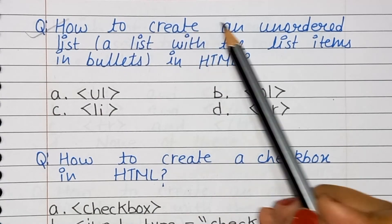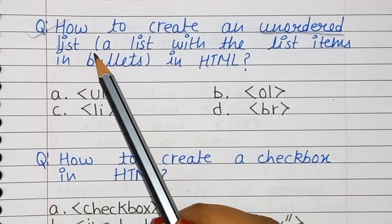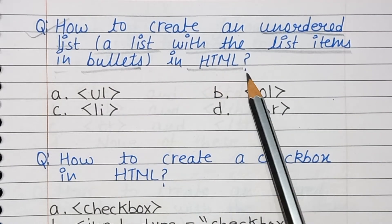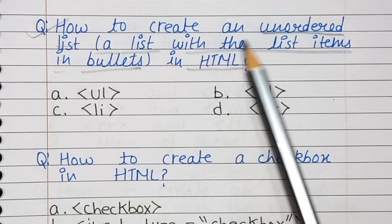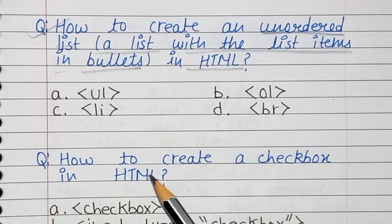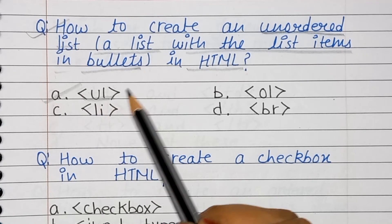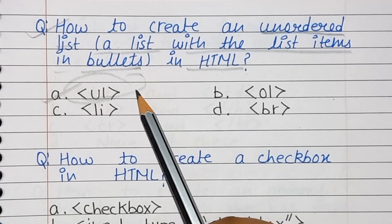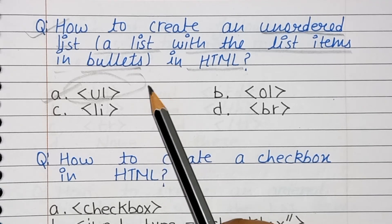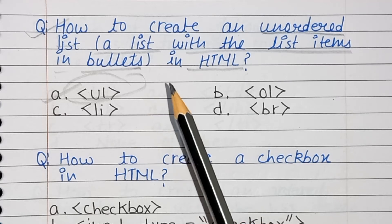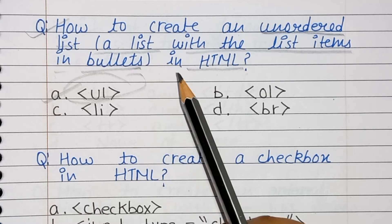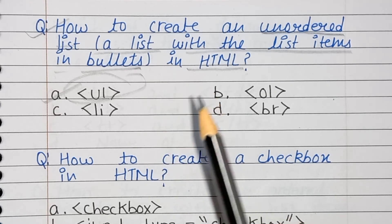Next question: How to create an unordered list — a list with items in bullets — in HTML? The answer is option A — the UL tag. The UL tag in HTML is used to display list items in bullet format. The unordered list is used when list items do not need to be in any particular order.